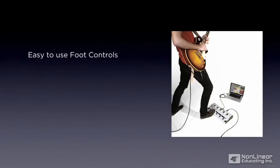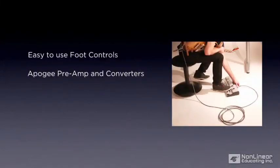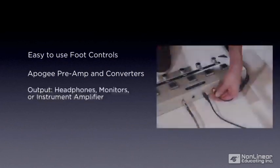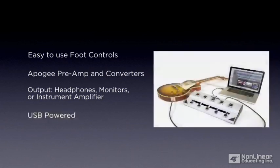GEO has everything you need to record and control your guitar in Logic Pro 9, Main Stage 2 and GarageBand 09. Easy to use foot controls allow you to keep your hands on the guitar. World class instrument preamp and converters to hear and record your guitar's true tone. Hear your guitar and mix with incredible clarity and dimension through the quarter inch stereo output. GEO is fully powered by the USB connection, eliminating the need for an external power source.